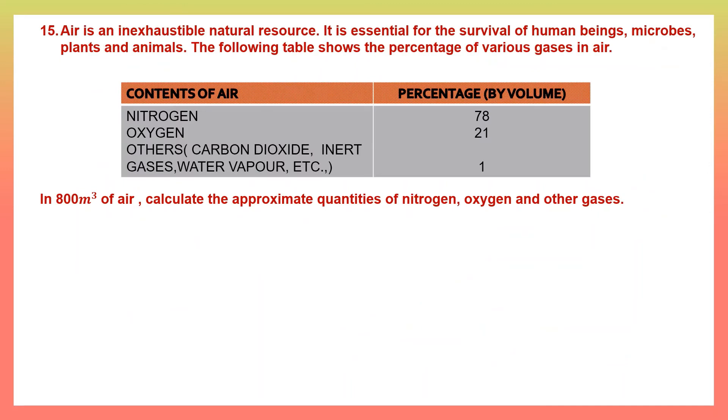Next question. Question 15. Air is an inexhaustible natural resource. It is essential for the survival of human beings, microbes, plants and animals. The following table shows the percentage of various gases in air. Nitrogen is 78%, Oxygen 21%, and all the other gases like carbon dioxide, inert gases, water vapor, etc. is 1%. In 800 meter cube of air, calculate the approximate quantities of nitrogen, oxygen and other gases. Quantity of air given to us is 800 meter cube.